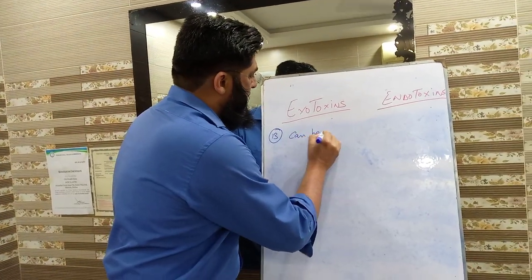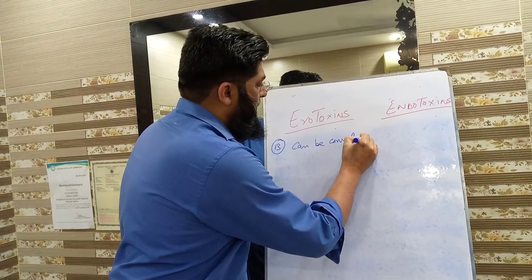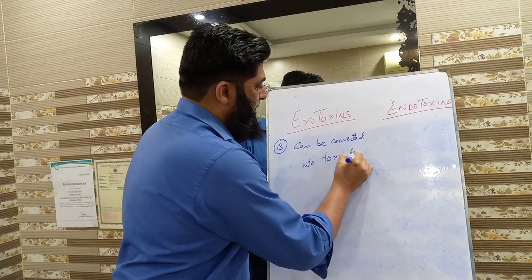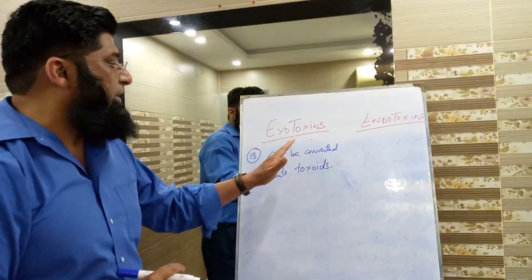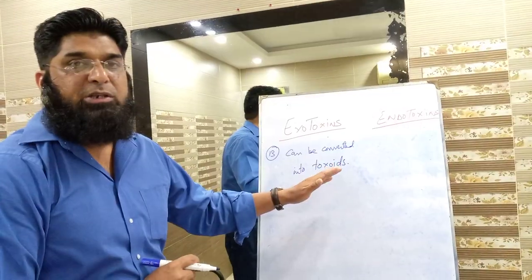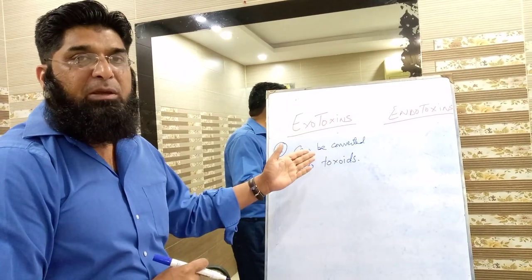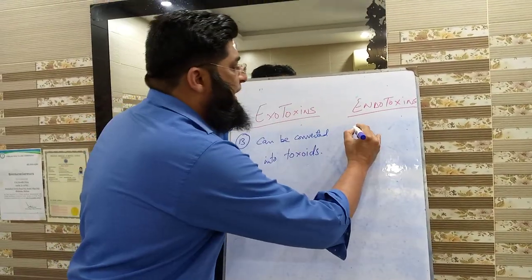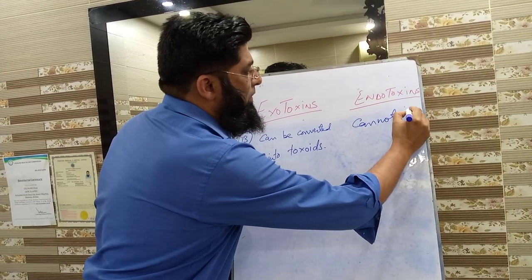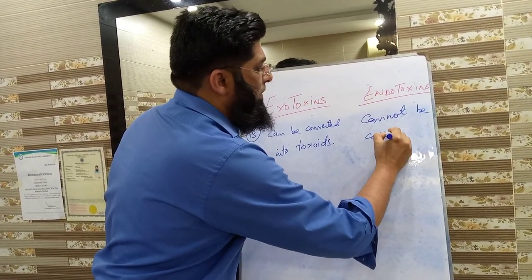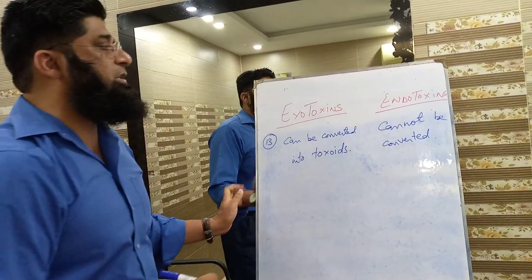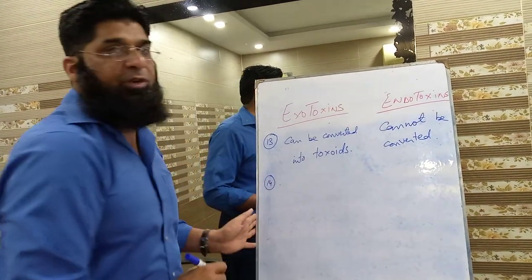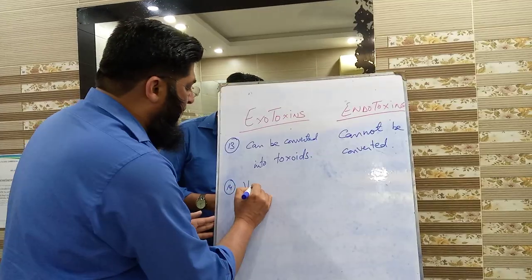Exotoxins can be converted into toxoids, and therefore vaccines can be made from exotoxins. Endotoxins, on the other hand, cannot be converted into toxoids.